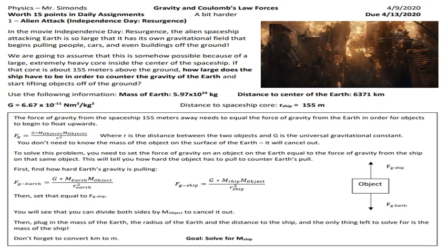Here is the first problem. We've got an alien spacecraft using gravity to pull objects off of the surface of the Earth. This slide sets up the whole problem. We have the mass and size of the Earth in kilometers for the radius, so that's going to have to be changed to meters. We know our gravitational constant G. We know how far away the spaceship is from the surface of the Earth when it starts pulling things off — that's 155 km, a number I estimated from the video.